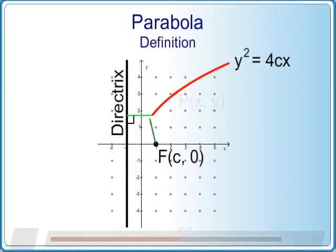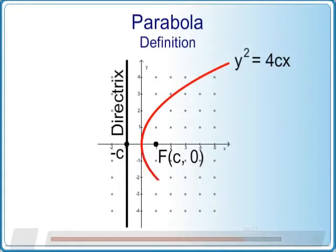A special case is when we consider the vertex of the parabola. The distance to the focal point is c. Therefore the distance to the directrix is also c. In our case, this means that the directrix has rule x is equal to minus c.